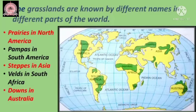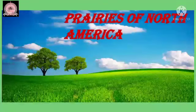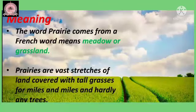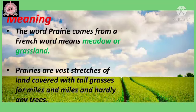As we have learnt about the different grasslands of the world, in this particular chapter we will discuss about the prairies of North America. The word 'prairie' comes from a French word which means meadow or grassland. Prairies are vast stretches of land covered with tall grasses for miles and miles, with hardly any trees.